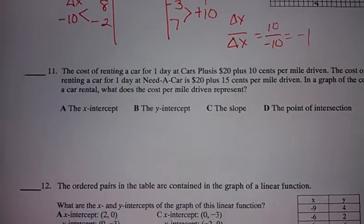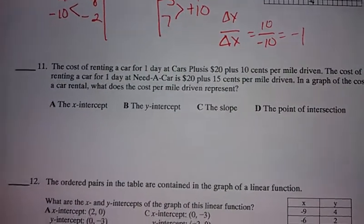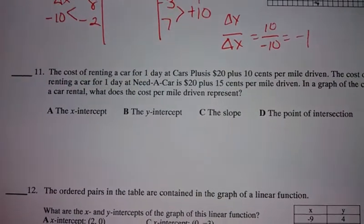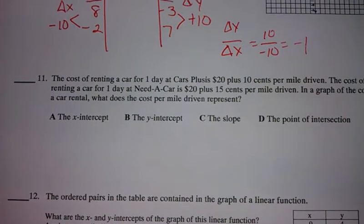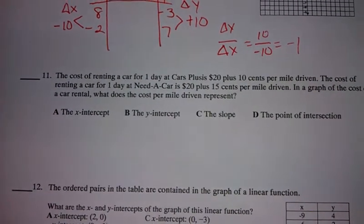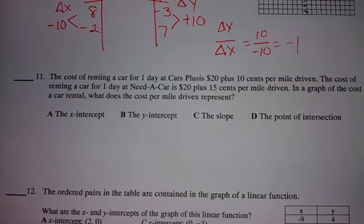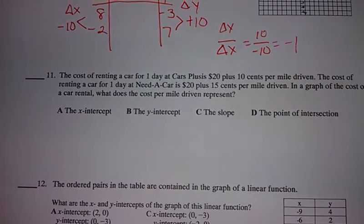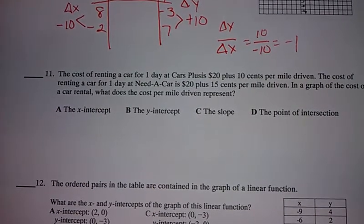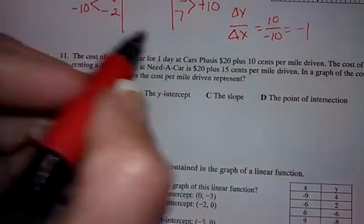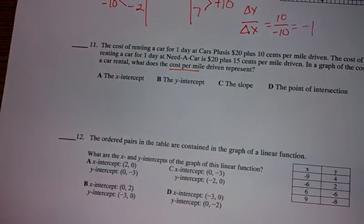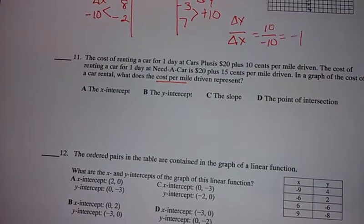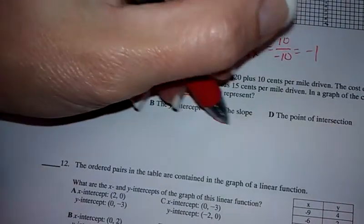The next one, the cost of renting a car for one day at car's price is $20 plus 10 cents per mile. The cost of renting a car for one day at need of car is $20 plus 15 cents per mile. In a graph of the cost of the rental car, what does the cost per mile, that right there gives me the key, that right there gives me the key, the per mile, that's going to tell me that that's the slope.